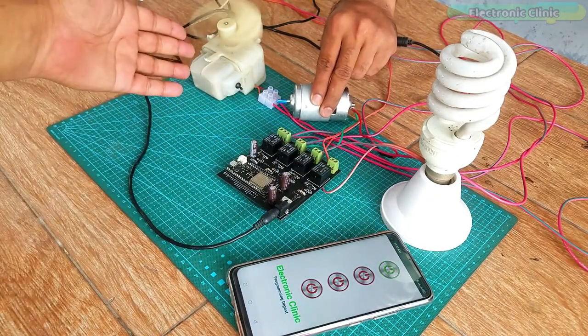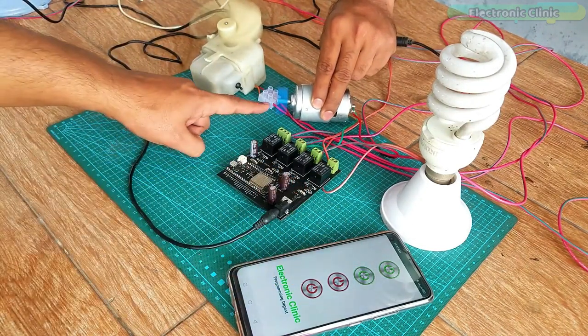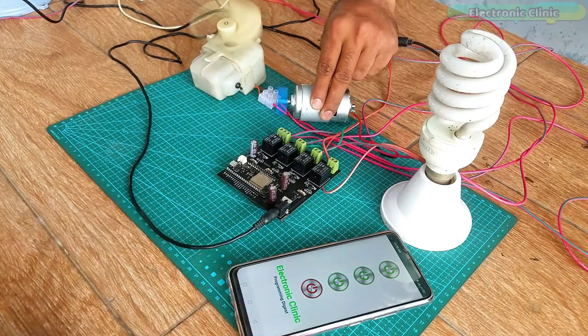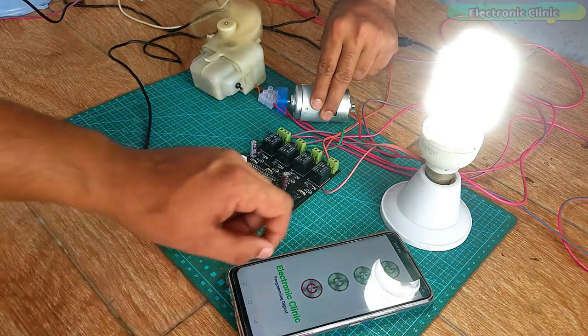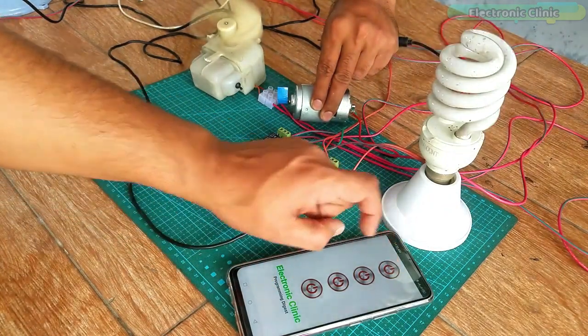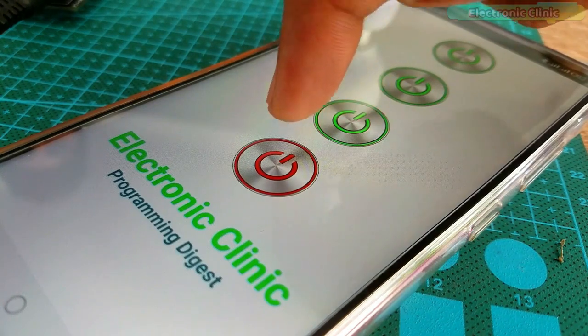I have already explained how to control different electrical loads wirelessly using the ESP32 built-in Bluetooth module and an Android application. So if you want to control your home appliances using Bluetooth and Android application then go ahead and watch my previous video. I will provide a link in the description.